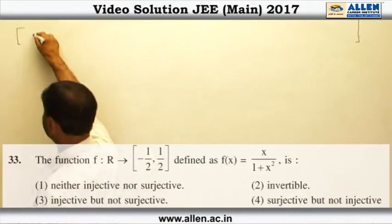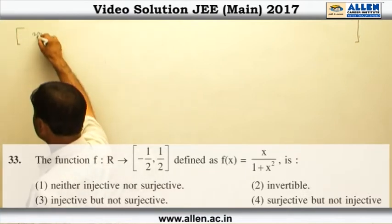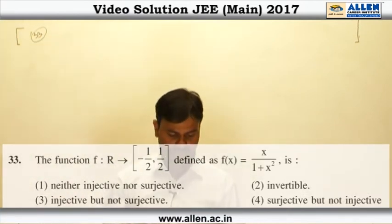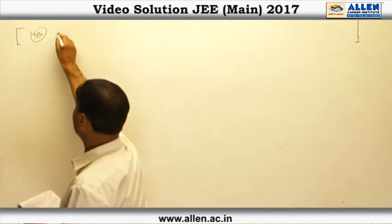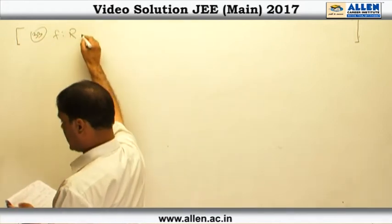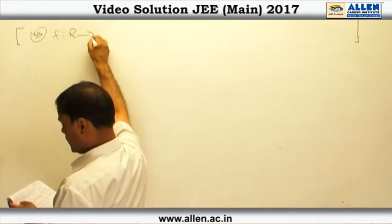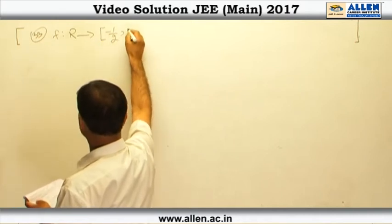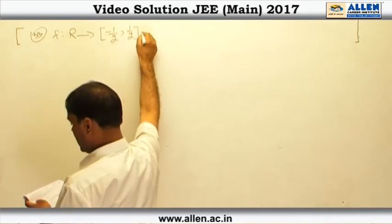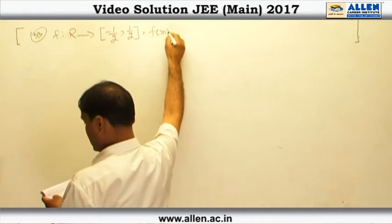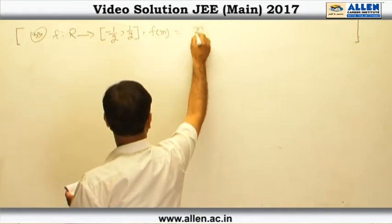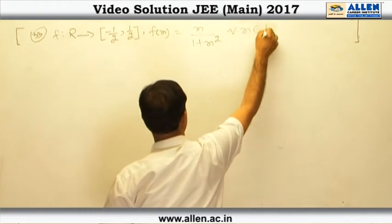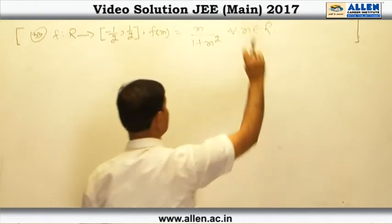Question number 33. In this question we are defining a function f from domain set of real numbers to co-domain given as the closed interval of minus half to half, and the function is defined as f(x) = x/(1 + x²) for every x belonging to ℝ.